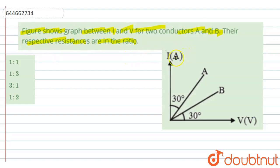So we are given a graph between current versus voltage for two conductors A and B as shown in the graph. And we have the options: 1 is to 1, 1 is to 3, 3 is to 1 and 1 is to 2.